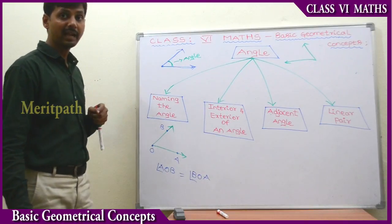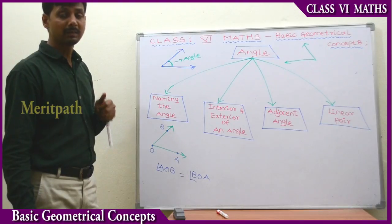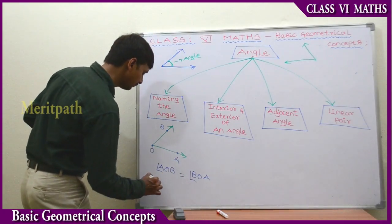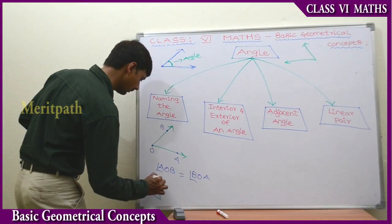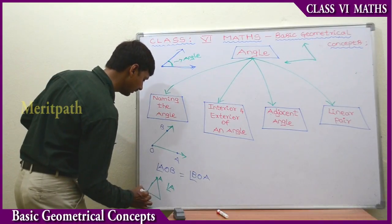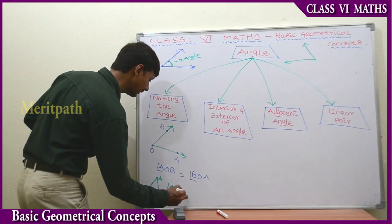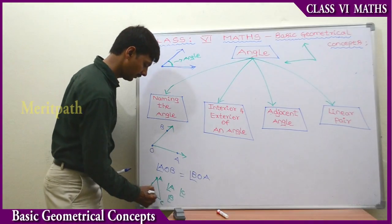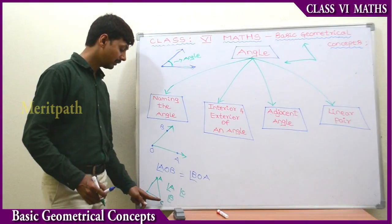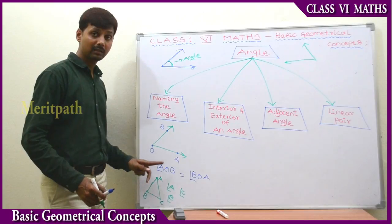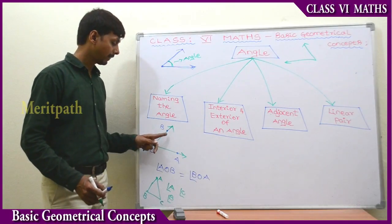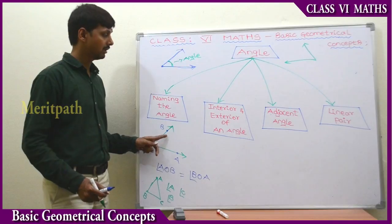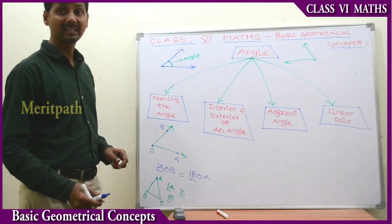This is the name of the angle. In a simple closed figure we can name an angle as angle A, angle B, or angle C. We can also name it as angle PAC, angle ACB, and angle CBA. These are types of angle naming.